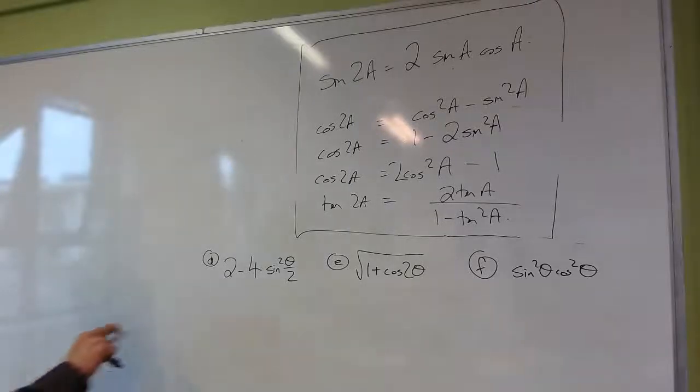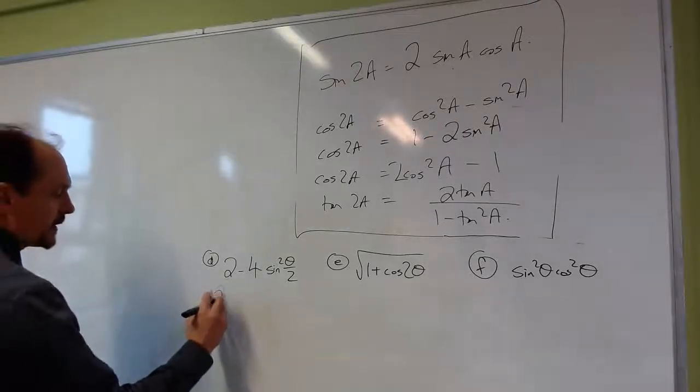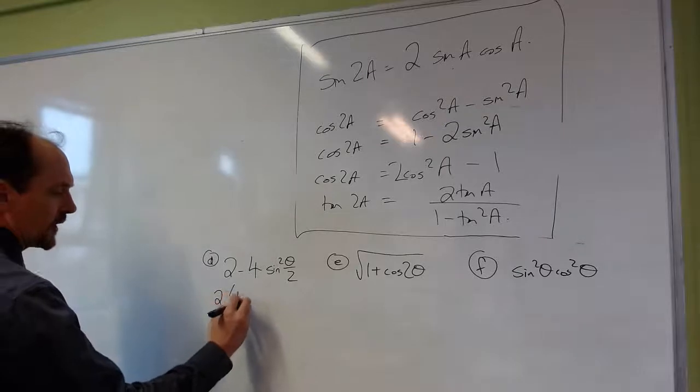The second row are a bit trickier. This one's still okay. Just take out the factor of 2 here.